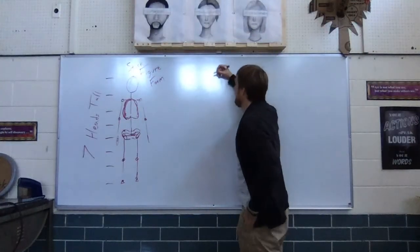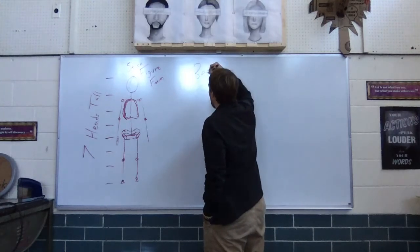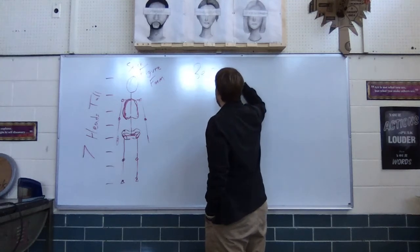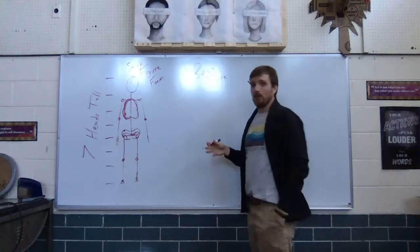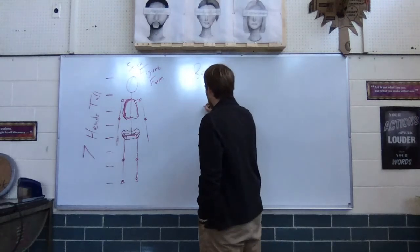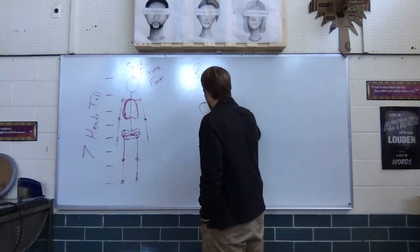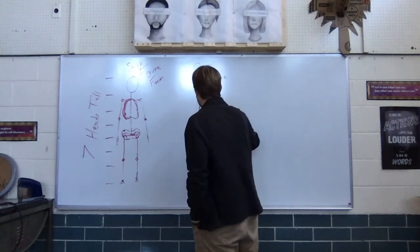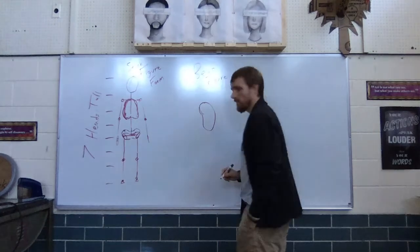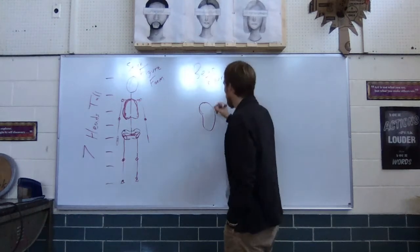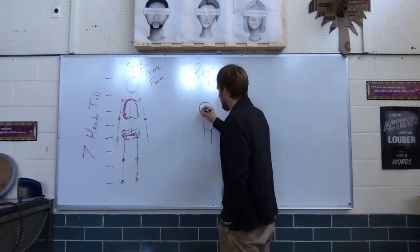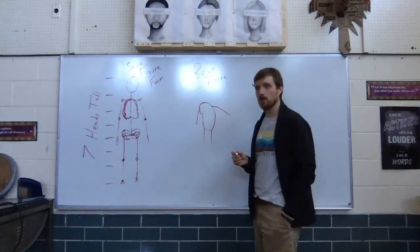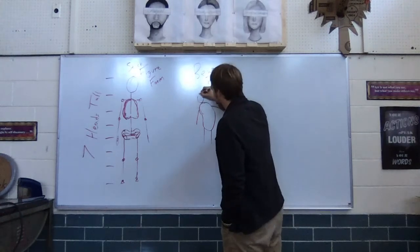This is our stick figure form, and what I'm going to show you over here is going to be what we are going to call our beam form or our beam figure. So if we're looking at drawing the human form, one thing we could do is we could start with kind of this beam shape, and then really simply put, if we threw some legs and some arms onto that beam, all of a sudden we get something that starts looking like a person.